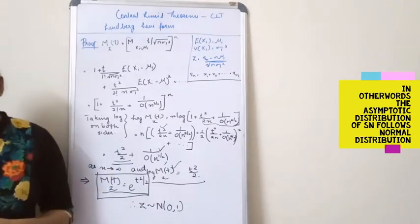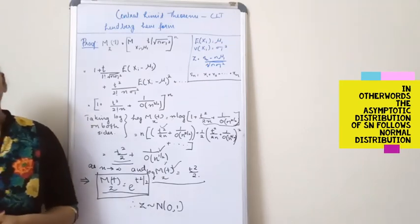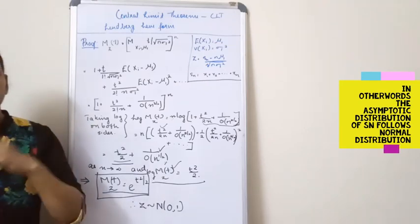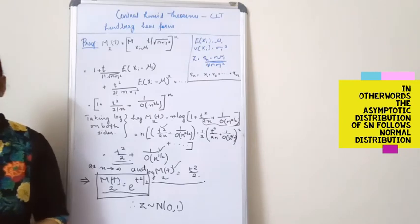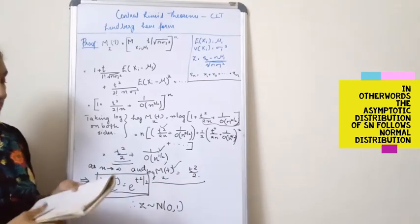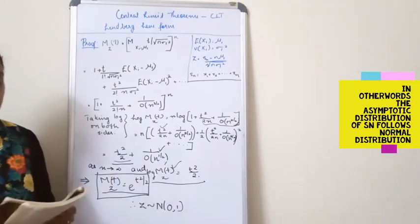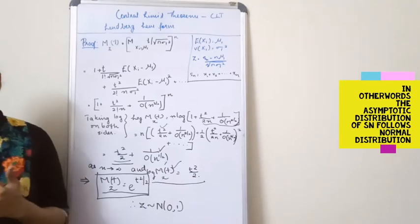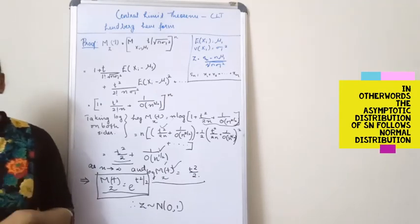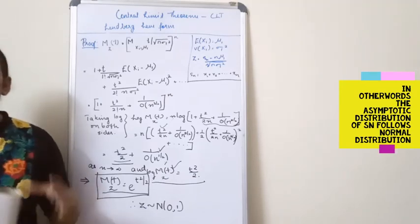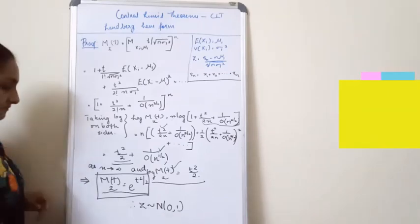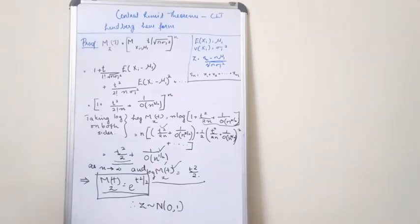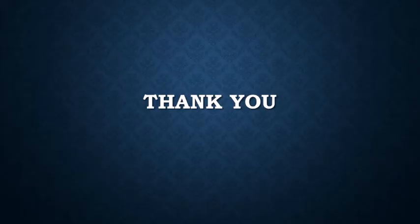Now you can take down some assumptions of the Central Limit Theorem. I hope you have understood the Central Limit Theorem. Thank you.